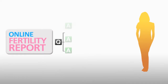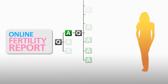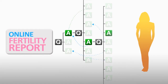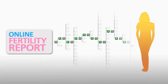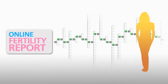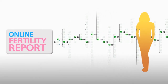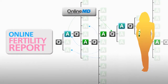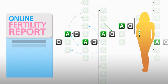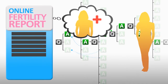Their responses influence the choice of subsequent questions. As each response is given, the intelligence system known as OnlineMD updates previous responses if a subsequent answer provides more relevant information. As the report is built up, all aspects of an individual's health are considered. The Fertility Report considers general health,